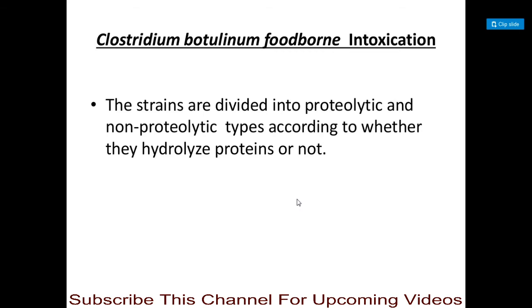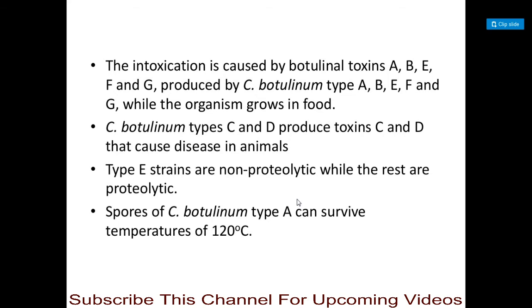The next food intoxication is Clostridium botulinum foodborne intoxication. Strains of Clostridium botulinum involved are divided into two types: proteolytic and non-proteolytic, based on whether they can hydrolyze proteins. The intoxication is caused by botulinum toxins A, B, E, F, and G, produced by Clostridium botulinum types A, B, E, F, and G respectively. Types C and D cause food intoxication in animals. Type E strains are non-proteolytic, while the remaining types are proteolytic.